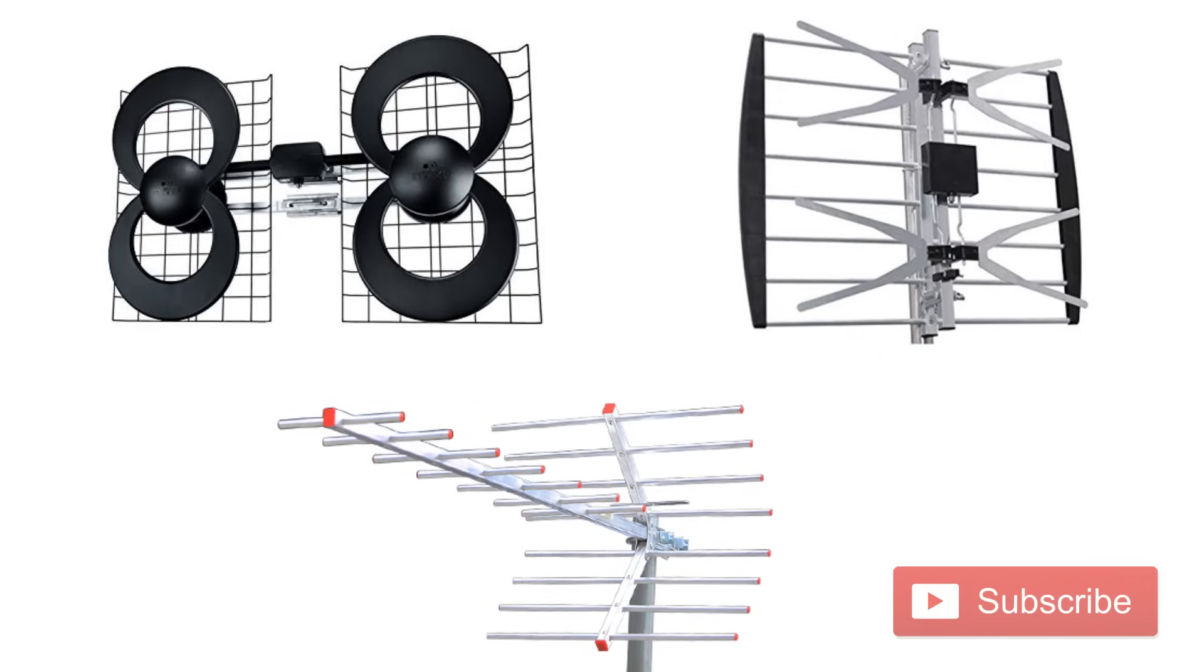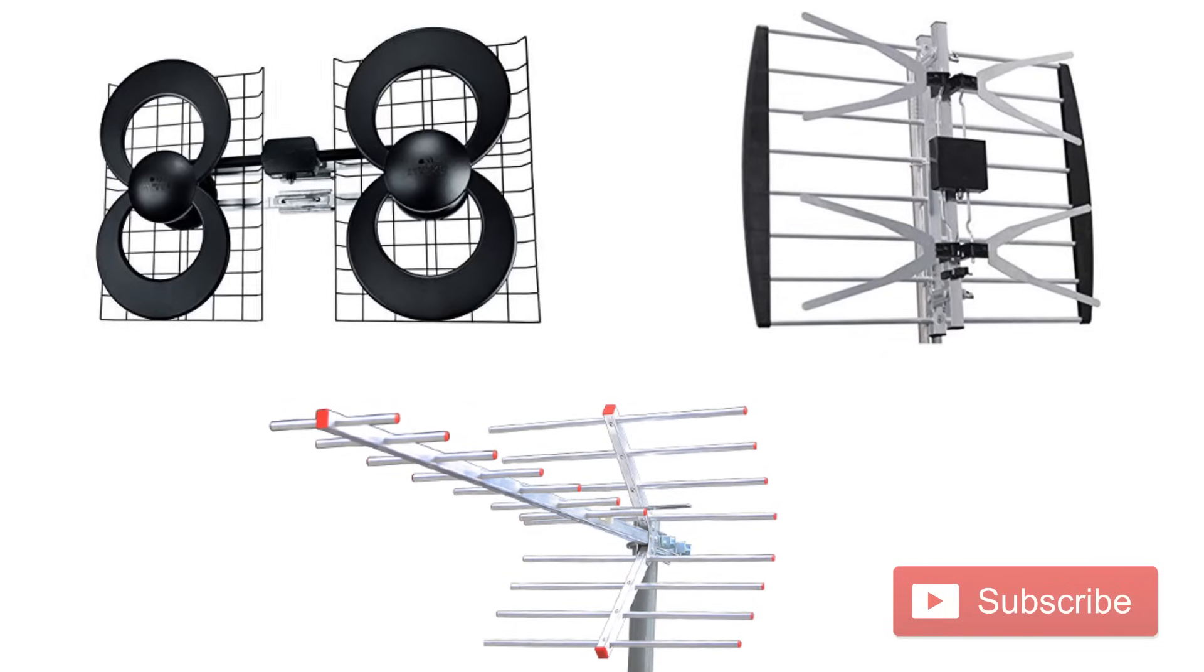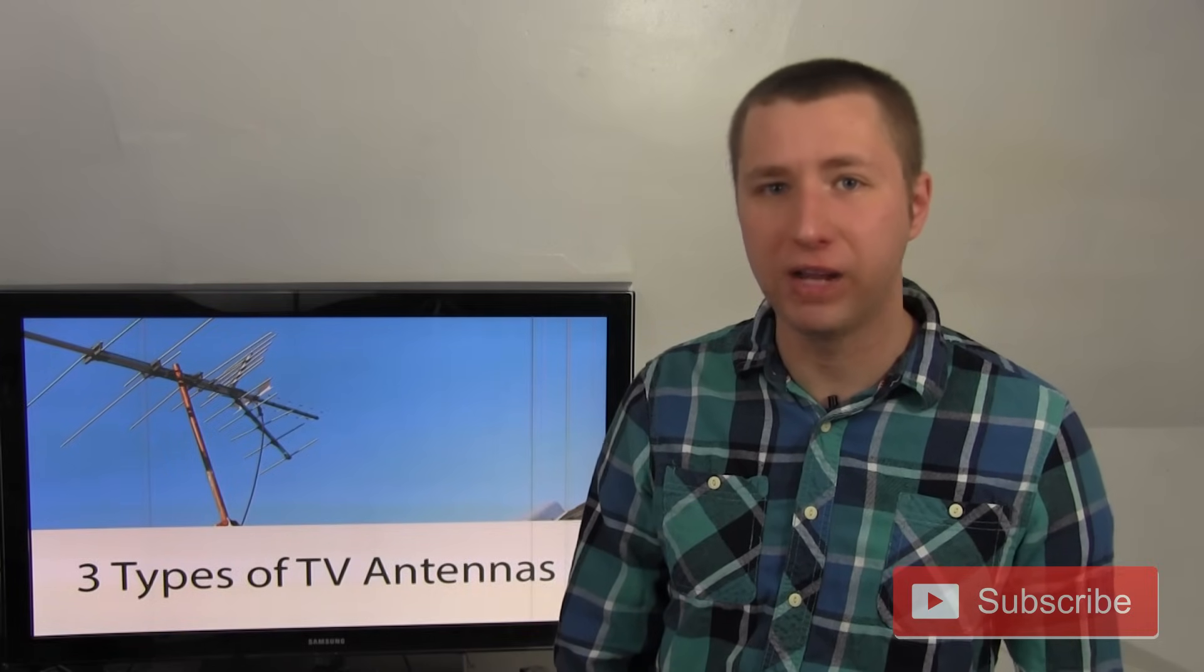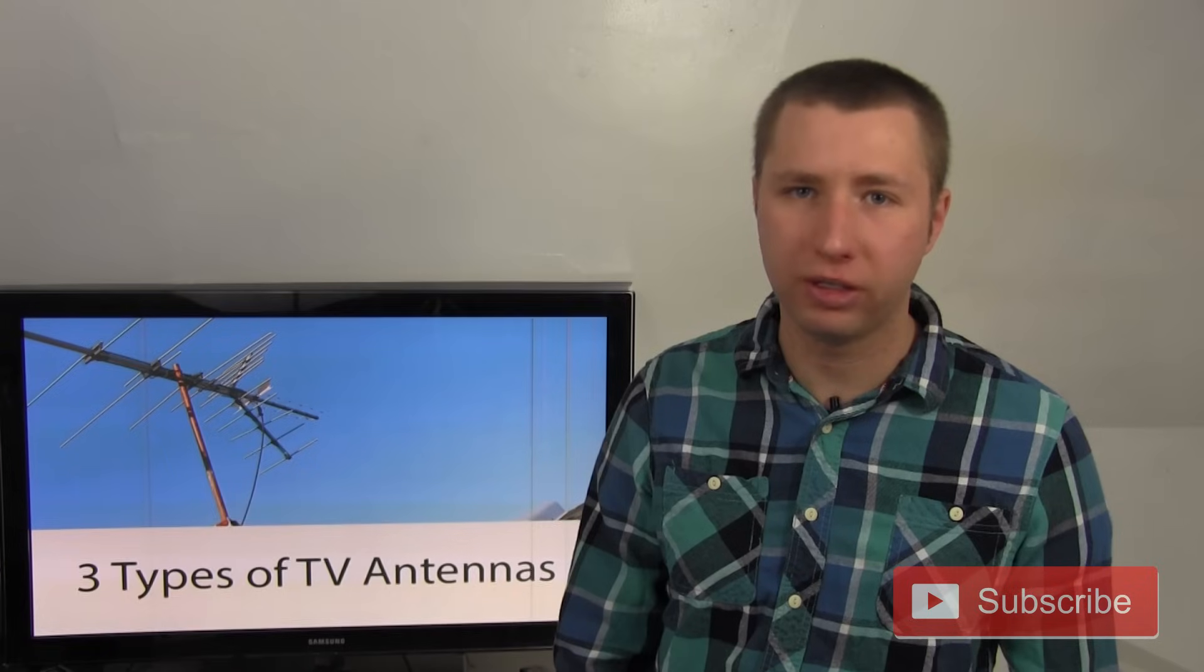They either have a sideways X or sideways eight, but sometimes they have little lines that are going through roughly about four inches in length. Those are designed to pick up UHF stations, and they probably won't do a good job picking up VHF stations because those are totally different frequencies.